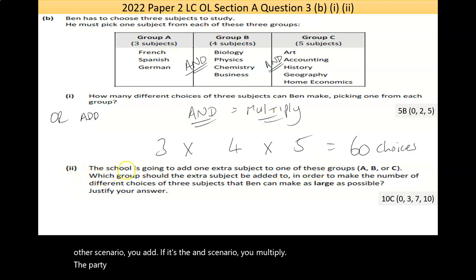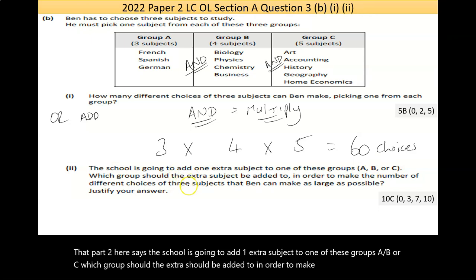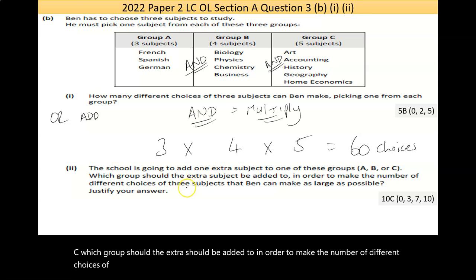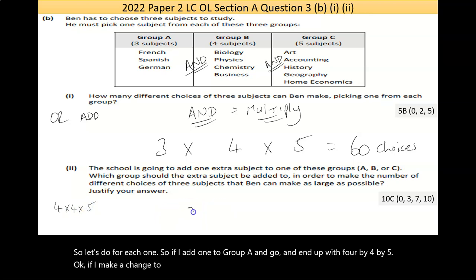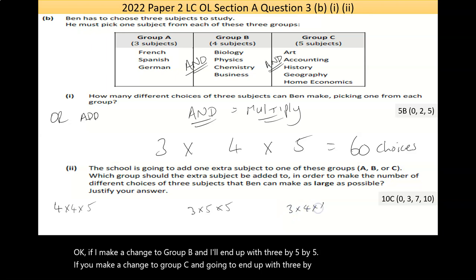Now part 2 here says, the school is going to add one extra subject to one of these groups, A, B, or C. Which group should the extra subject be added to in order to make the number of different choices of three subjects that Ben can make as large as possible? So let's do for each one. So if I add one to group A, I'm going to end up with 4 by 4 by 5. If I make a change to group B, I'm going to end up with 3 by 5 by 5. If I make a change to group C, I'm going to end up with 3 by 4 by 6. So which of them is biggest?